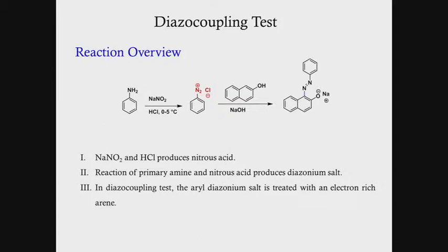Here I will describe the reaction scheme and mechanistic part of the diazo coupling test. The reaction overview is: first, if you take aniline in the presence of aqueous sodium nitrite solution and hydrochloric acid, it will form an aryl diazonium salt at 0 to 5 degrees centigrade. After that, adding alkaline beta-naphthol solution gives the red color azo dye.